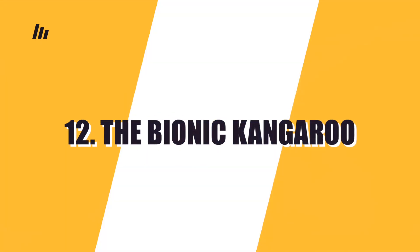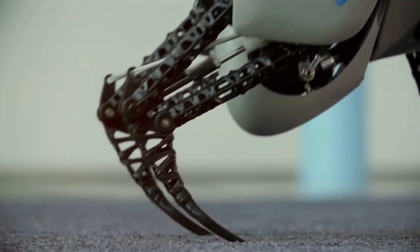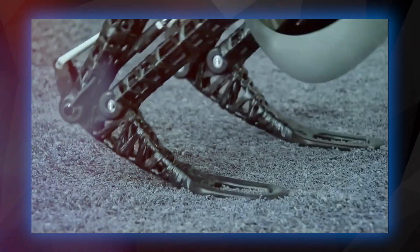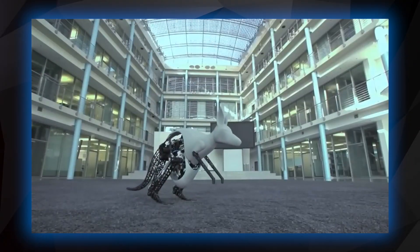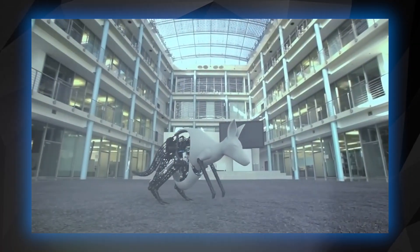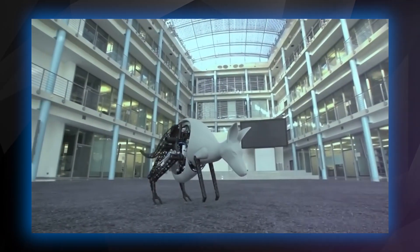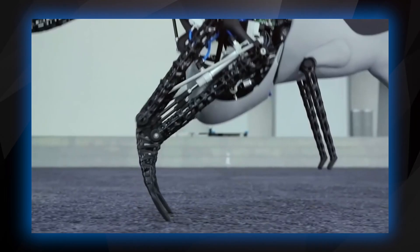Number 12: The Bionic Kangaroo. Scientists have made great progress. The robot's motor system returns the energy used in a jump and uses it to make a new jump. The tendons in a kangaroo's feet act like springs, recovering energy and reusing it for the next jump, giving it incredible endurance.